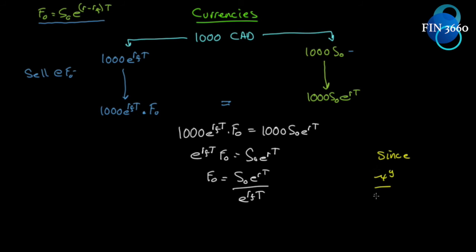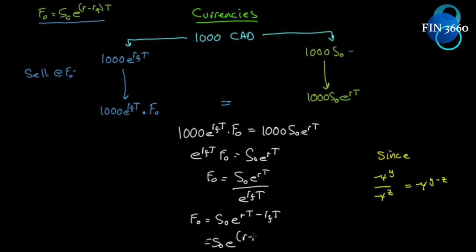We just have to remember from high school math: x to the y divided by x to the z equals x to the (y minus z). We can now simplify by writing F₀ = S₀ × e^(R×T minus RF×T). We just have to subtract the power terms, and now we can simplify: T is a common element for both, so S₀ × e^((R minus RF) × T).